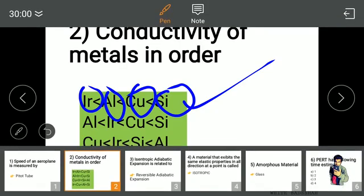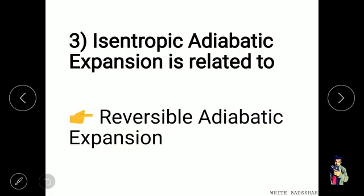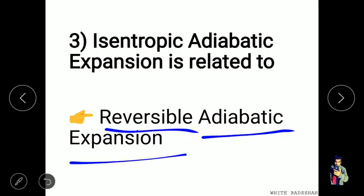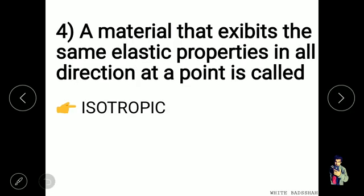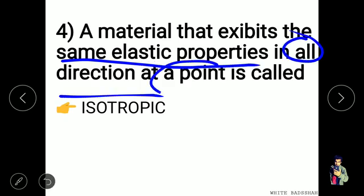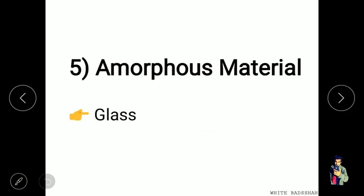Third question: isentropic adiabatic expansion is related to reversible adiabatic expansion — both are similar names for the same process. The material that exhibits the same elastic properties in all directions at a point is called an isotropic object.